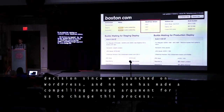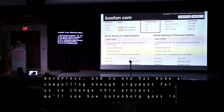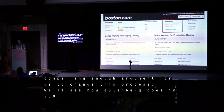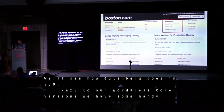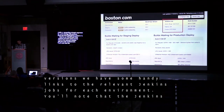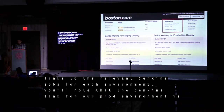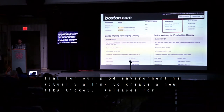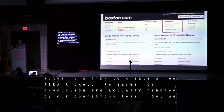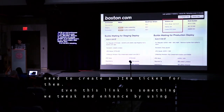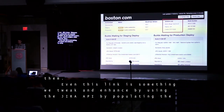We'll see how Gutenberg goes in 5.0. Next to our WordPress core versions, we have handy links to the relevant Jenkins jobs for each environment. The Jenkins link for our production environment is actually a link to create a new Jira ticket, because releases for production are handled by our operations team. We use the Jira API to pre-populate the ticket with all the necessary information for the release.